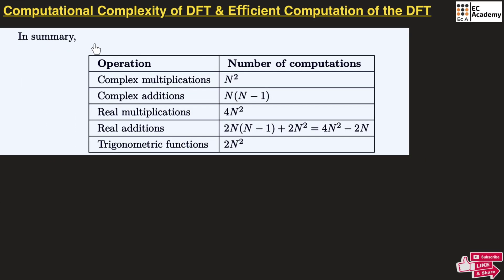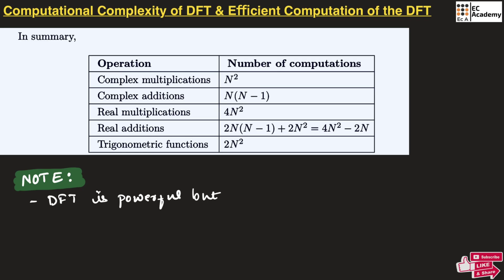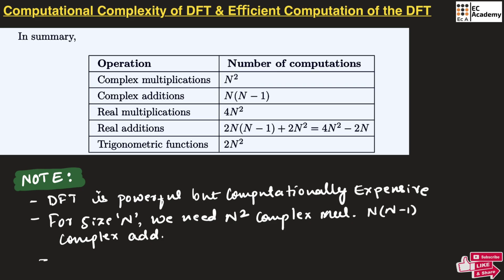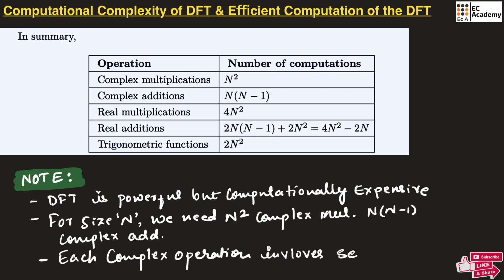In summary, for x of k: the complex multiplications required is N squared, complex additions required is N into N minus 1, real multiplications is four N squared, real additions is four N squared minus two N, and trigonometric function evaluations is two N squared. So in this lecture we understood that DFT is powerful but computationally expensive. For size N, we need N squared complex multiplications, N into N minus 1 complex additions and so on, and each complex operation involves several real operations.